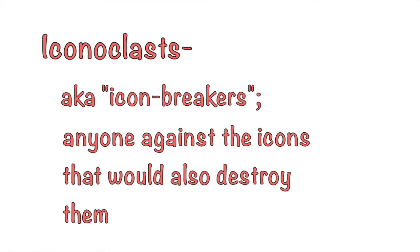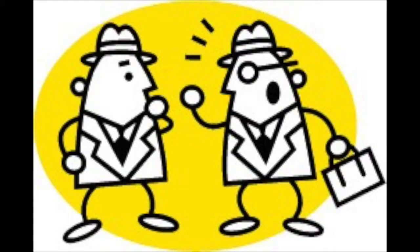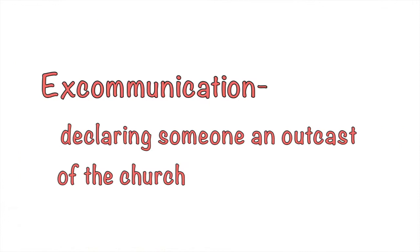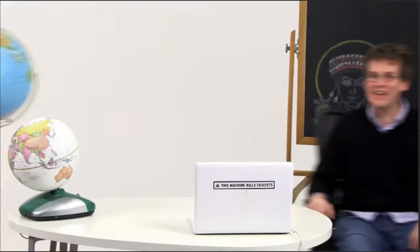Since the Pope and the patriarch were both arguing over who had power over the church, they tried excommunicating each other. Excommunication is when you declare someone an outcast of the church. And now to John Green to finish us off with some more information on the Byzantine Empire.